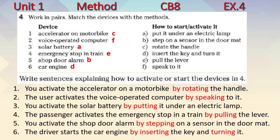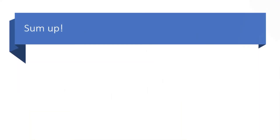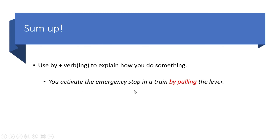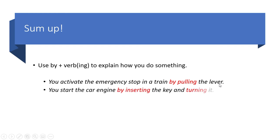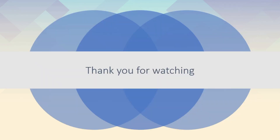Let's wrap up what we've learned in this lesson. We've learned that when you want to explain how you do something, you use 'by' followed by a verb with -ing. For example: 'You activate the emergency stop in a train by pulling the lever.' Or: 'You start the car engine by inserting the key and turning it.' This is the end of our lesson. Thank you for watching. Goodbye.